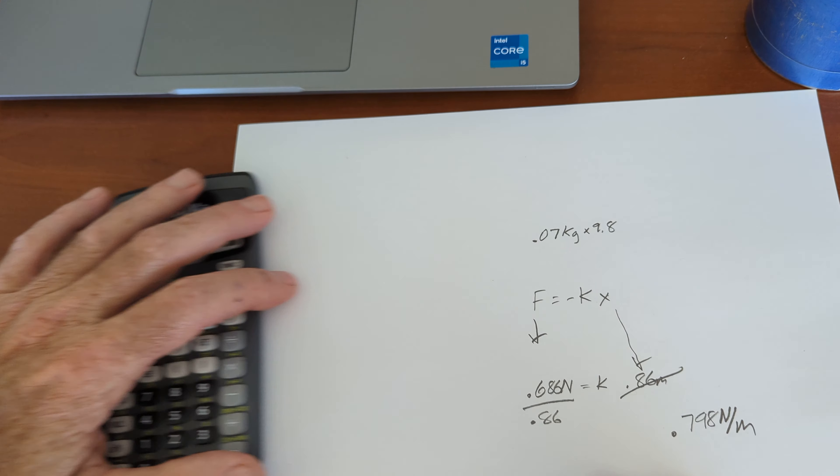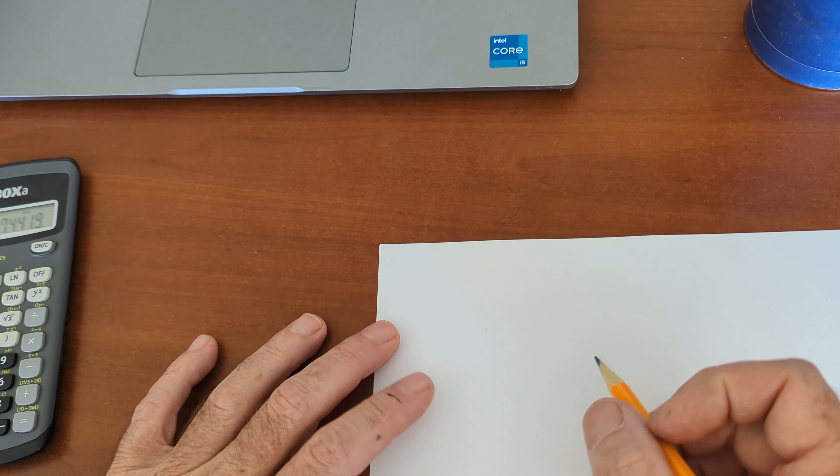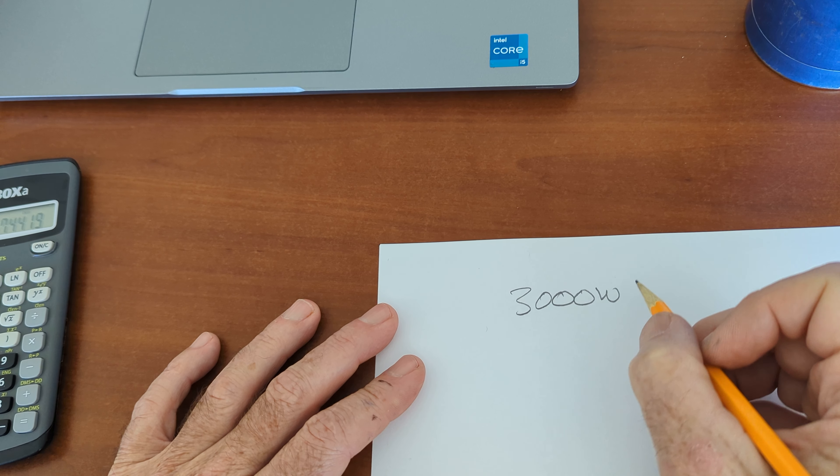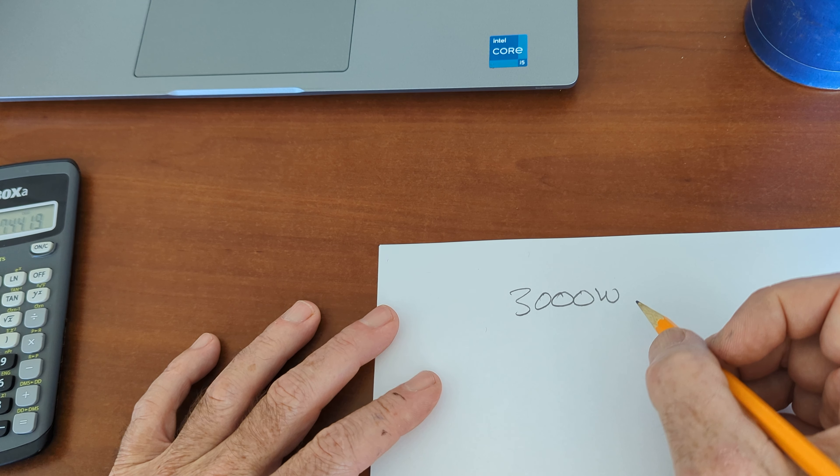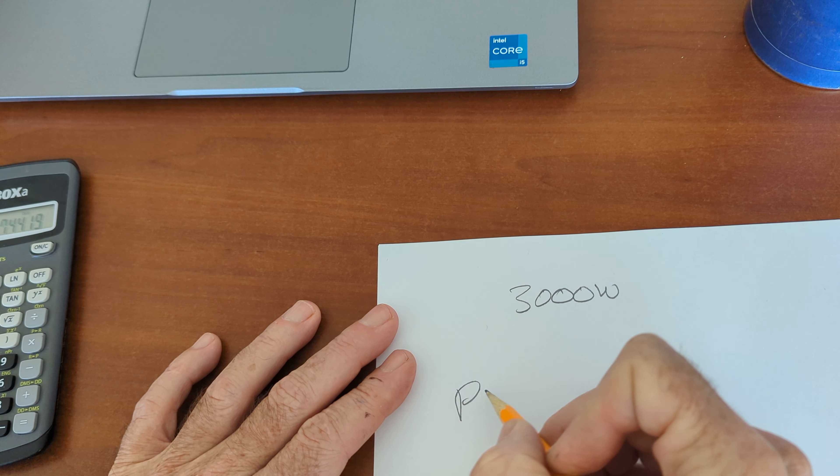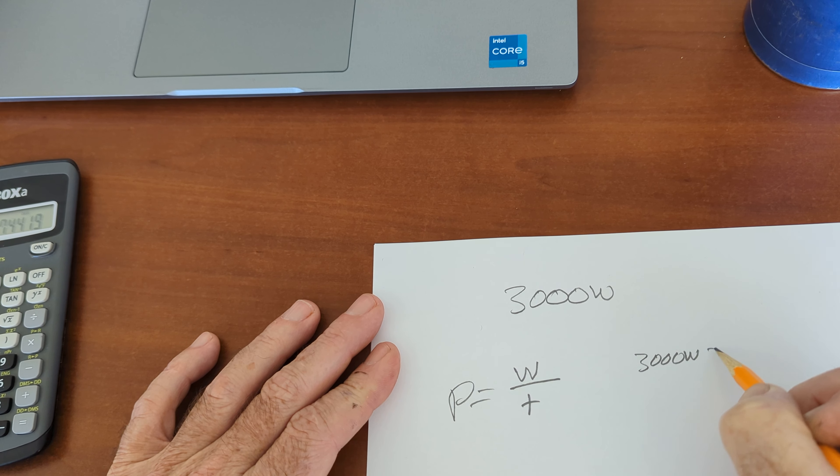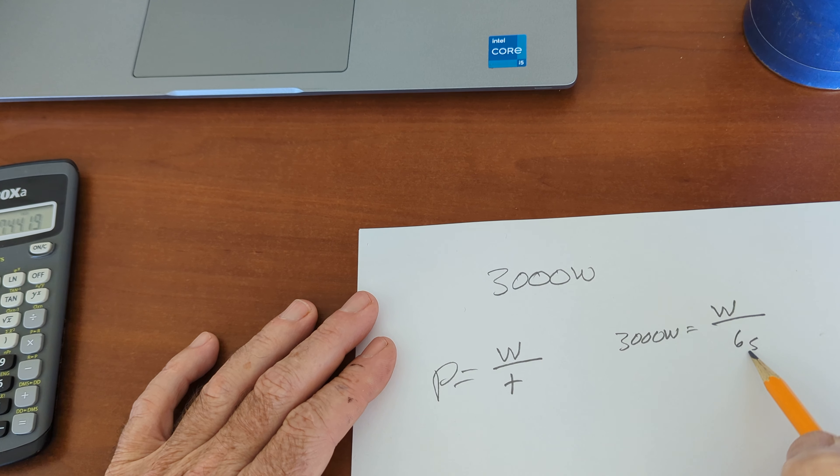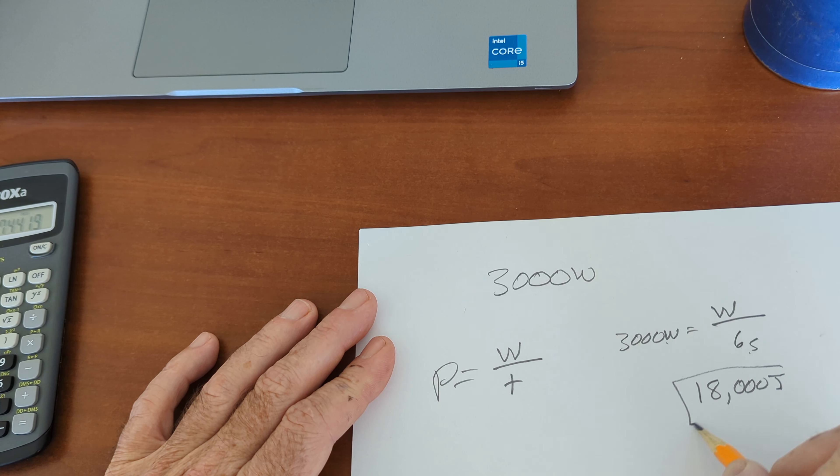Number 12, a 3,000 watt motor pulls a box 5 meters across the ice in 6 seconds. So, 3,000 watts power is equal to work divided by time. 3,000 watts is equal to work, and it did it in 6 seconds. So, 6 times 3,000 means it did 18,000 joules of work. That's how much work it did.